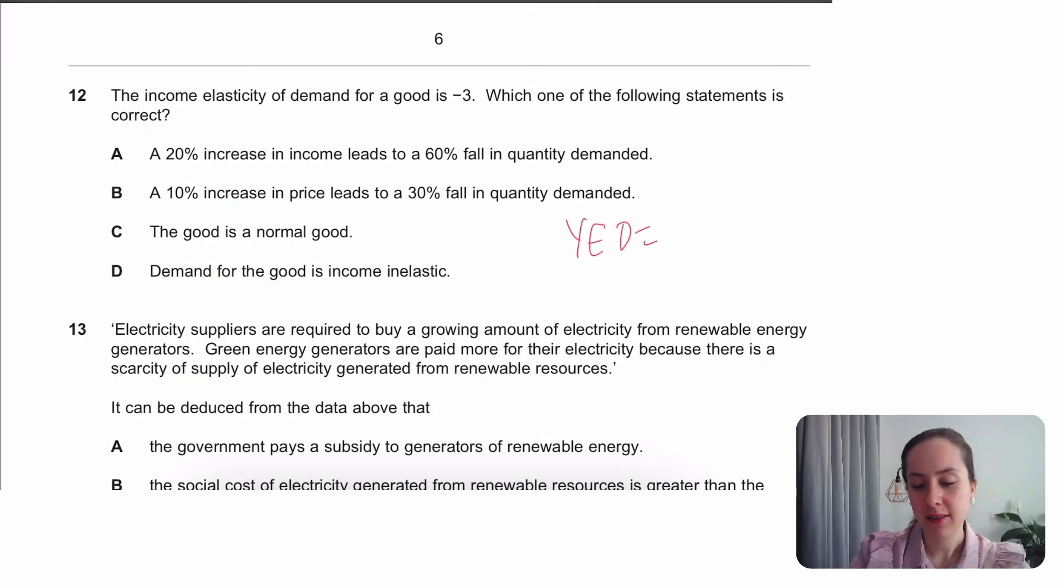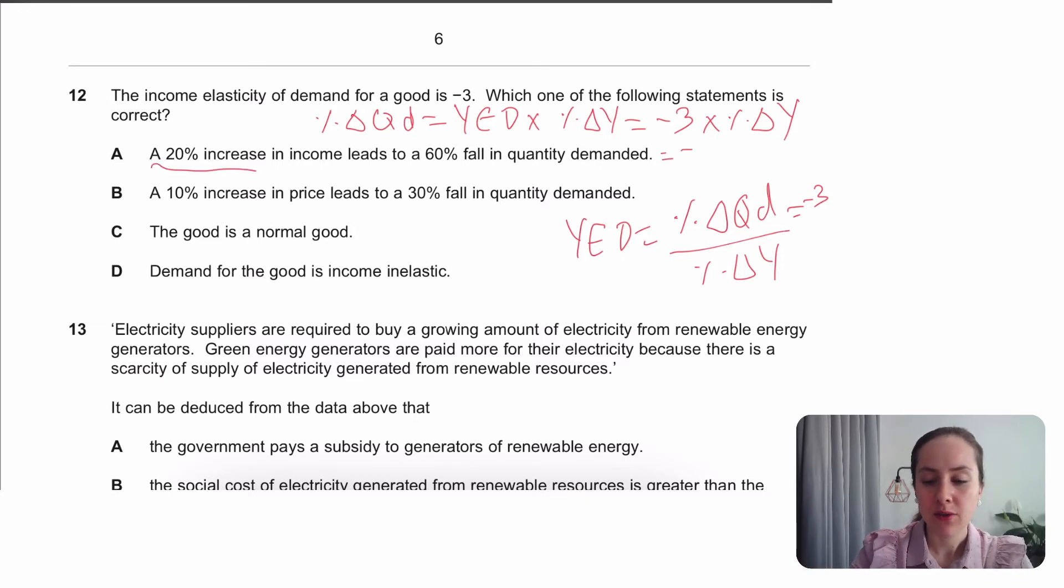The YED is, it's good to know these equations, always quantity on the top. And then we've got income at the bottom. And it says here that this is minus three. First, option A wants us to calculate what's happening to percentage change in quantity demanded. So if you rearrange that, it might have been some time since you've done this, but you want to multiply the YED times the percentage change in income. You've been given the YED as minus three and the income you have not been given. So I'm actually quite hesitant to give any numbers unless they give it to us. But here they've told us there's a 20% increase in income. So we would be multiplying minus three times plus 20 gives us a 60% fall. So that is the answer.